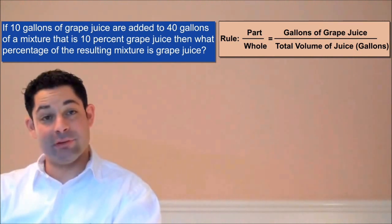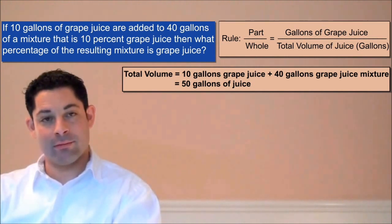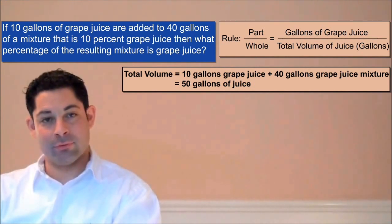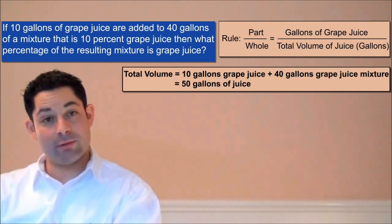First, let's do the easy part. The first step is to calculate how much total volume we're working with. Since we're mixing 10 gallons of grape juice with 40 gallons of grape and orange juice, we have a total of 50 gallons of juice. So the total volume is 50 gallons.